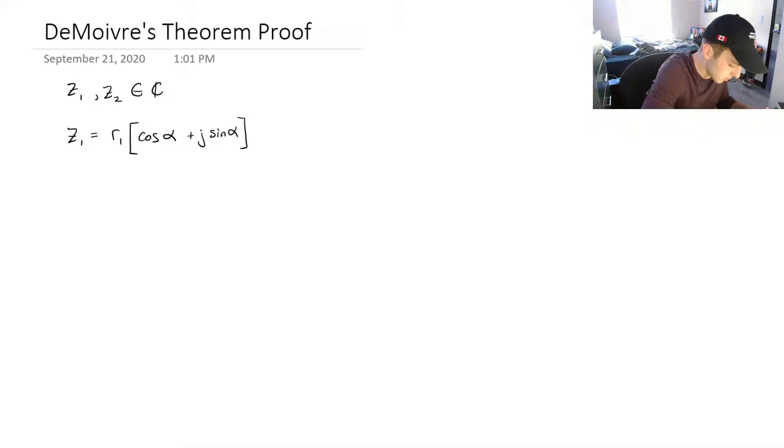And z2, we'll let that be r2 times cos of, and this one we'll choose beta plus j sin of beta.